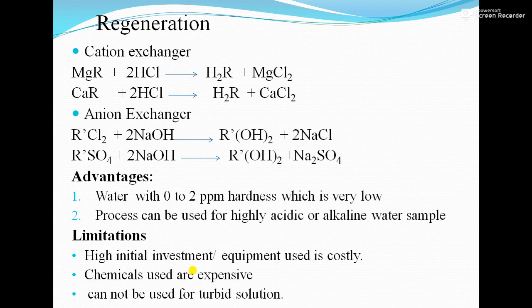Advantages: water with 0 to 2 ppm hardness, which is very low, can be obtained from this method. Second, the process can be used for highly acidic or alkaline water. Limitations: high initial investment — the equipment used is costly. Next, the chemicals used are expensive. Third, it cannot be used for turbid solutions. Those are the limitations of the ion exchange process.